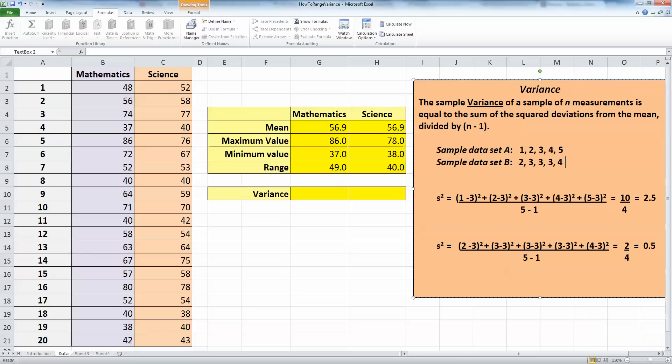So n is 5. The number of measures in each data set is 5. And if we recall, the average or mean of each data set is 3. So the variance of a sample of n measurements, 5 in this example here, is equal to the sum of the squared deviations from the mean divided by n, the number of measurements, minus 1. So that's quite a mouthful there, but let's see what this actually means.